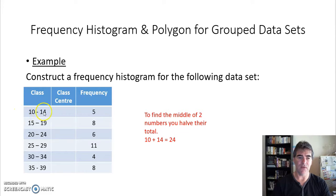So take our 10 and 14 for this class, we get 24, half of that is 12, and so our class center here will be 12, and we do that for each one.